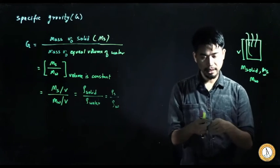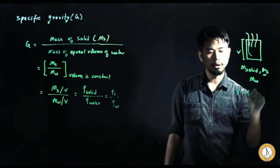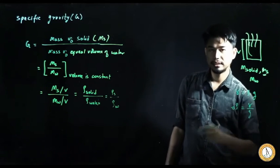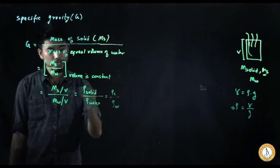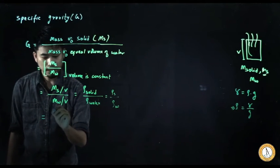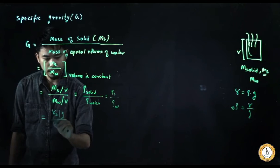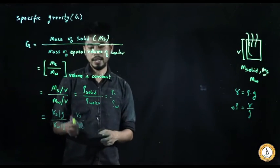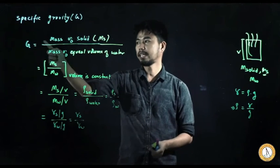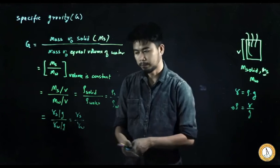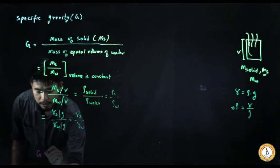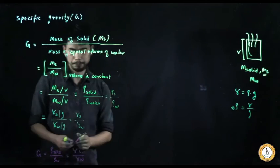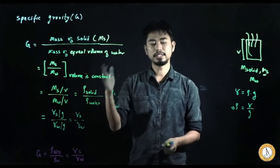There is a relation between density and unit weight: γ = ρ × g, so ρ = γ/g. Substituting, density of solid divided by density of water becomes unit weight of solid divided by unit weight of water. So specific gravity can also be defined as the ratio of unit weight of solid to unit weight of water. G = ρs/ρw = γs/γw.